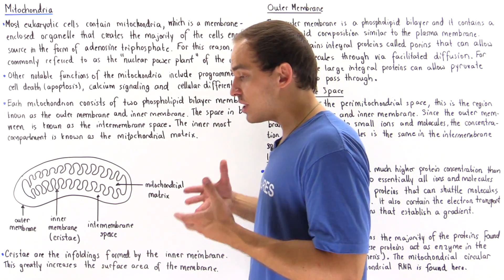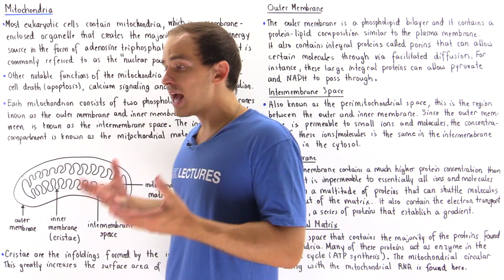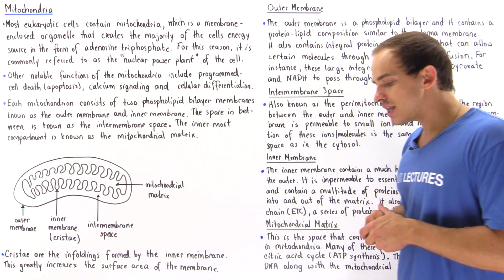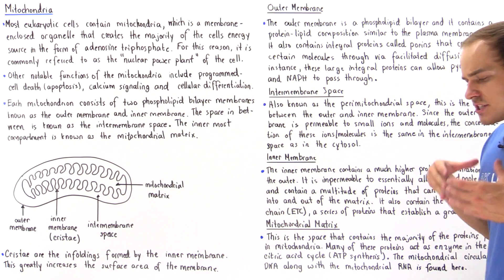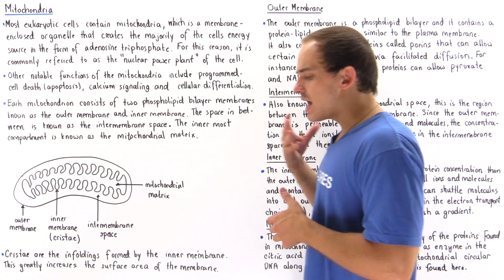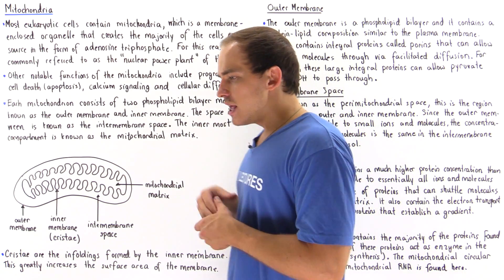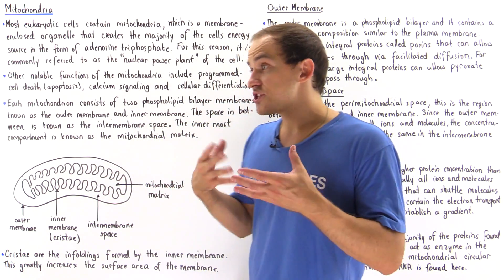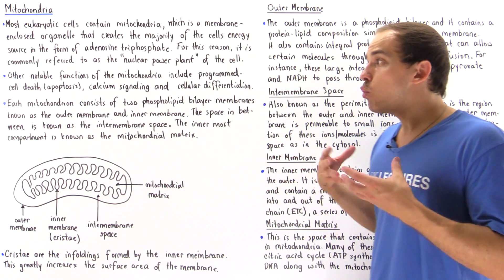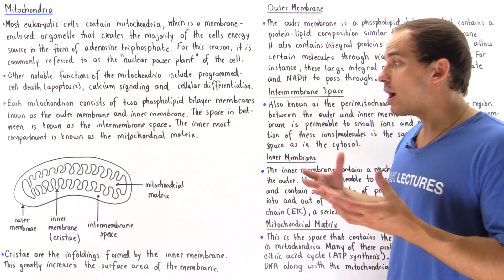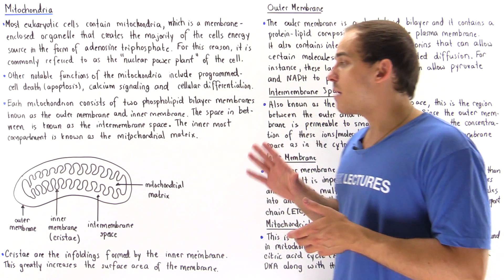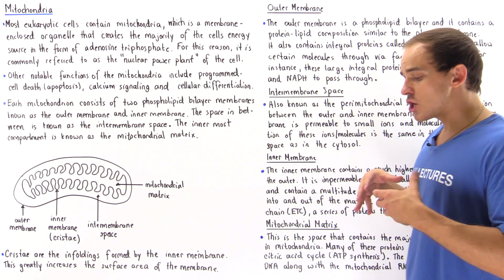This energy also powers processes within the eukaryotic multicellular organism. There is a theory known as the symbiotic theory that describes the way that eukaryotic cells obtained their mitochondria.